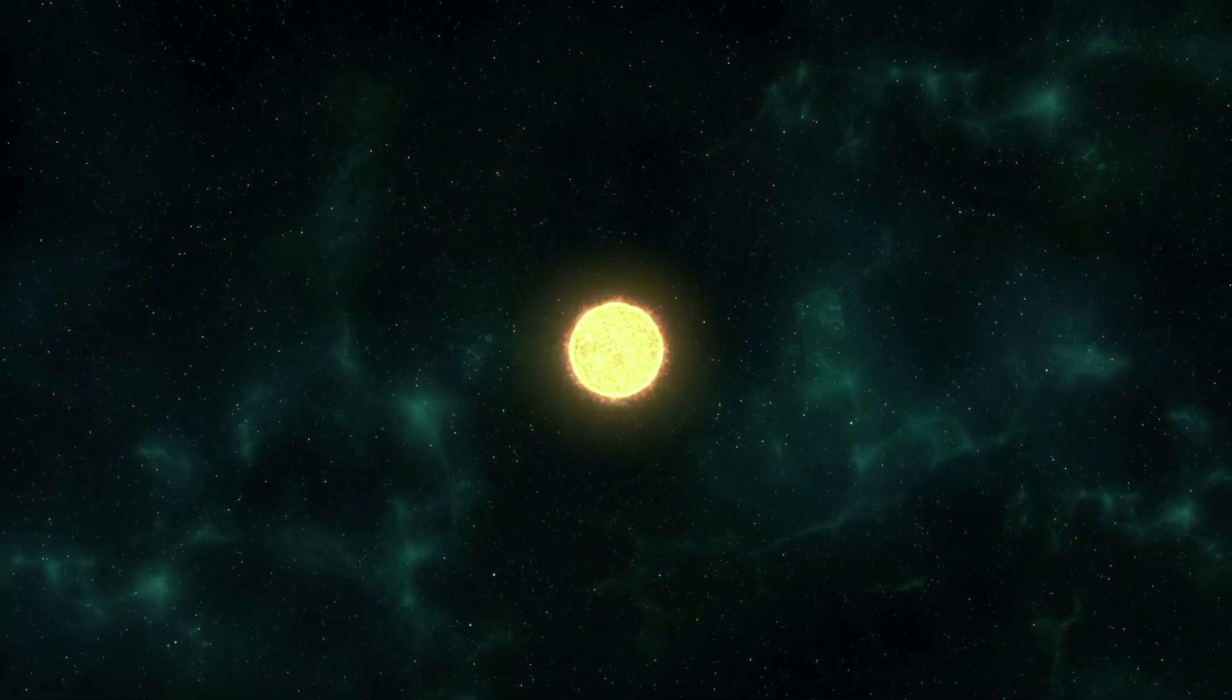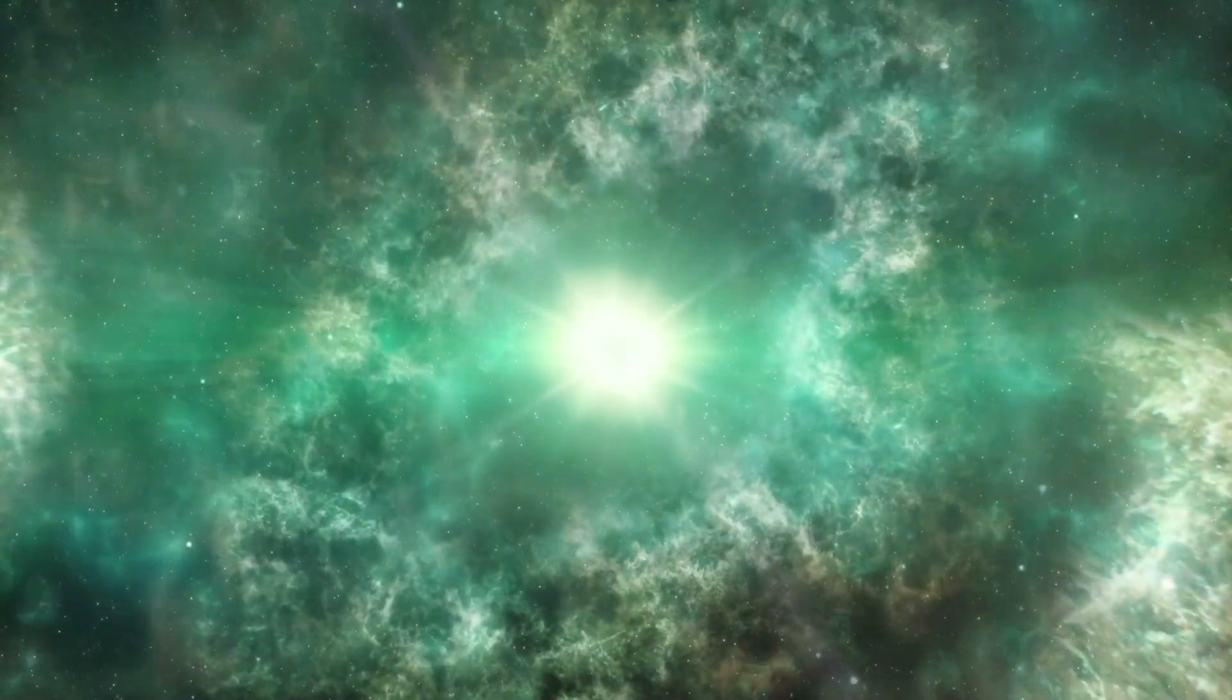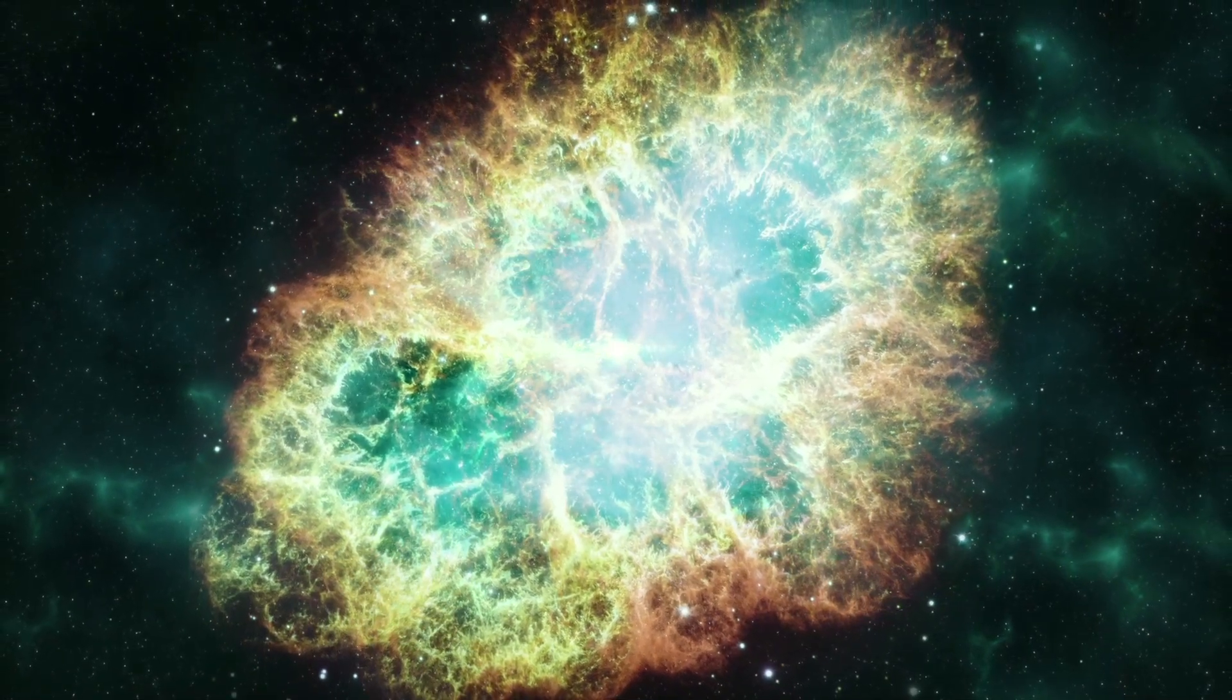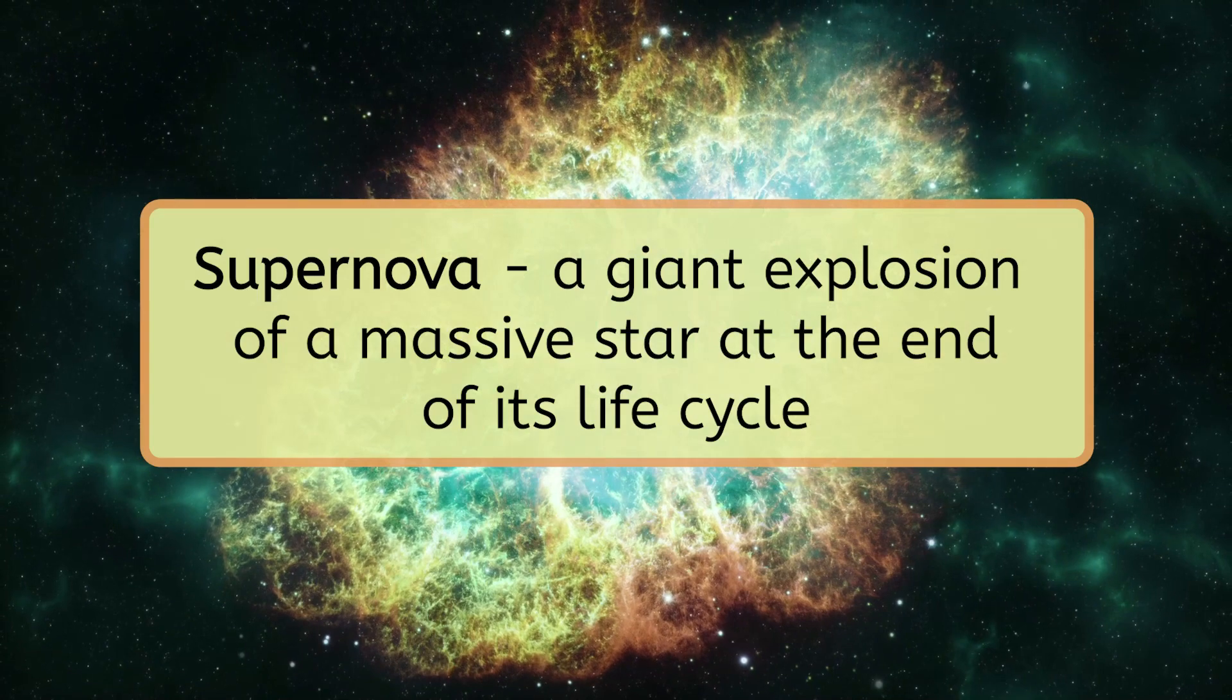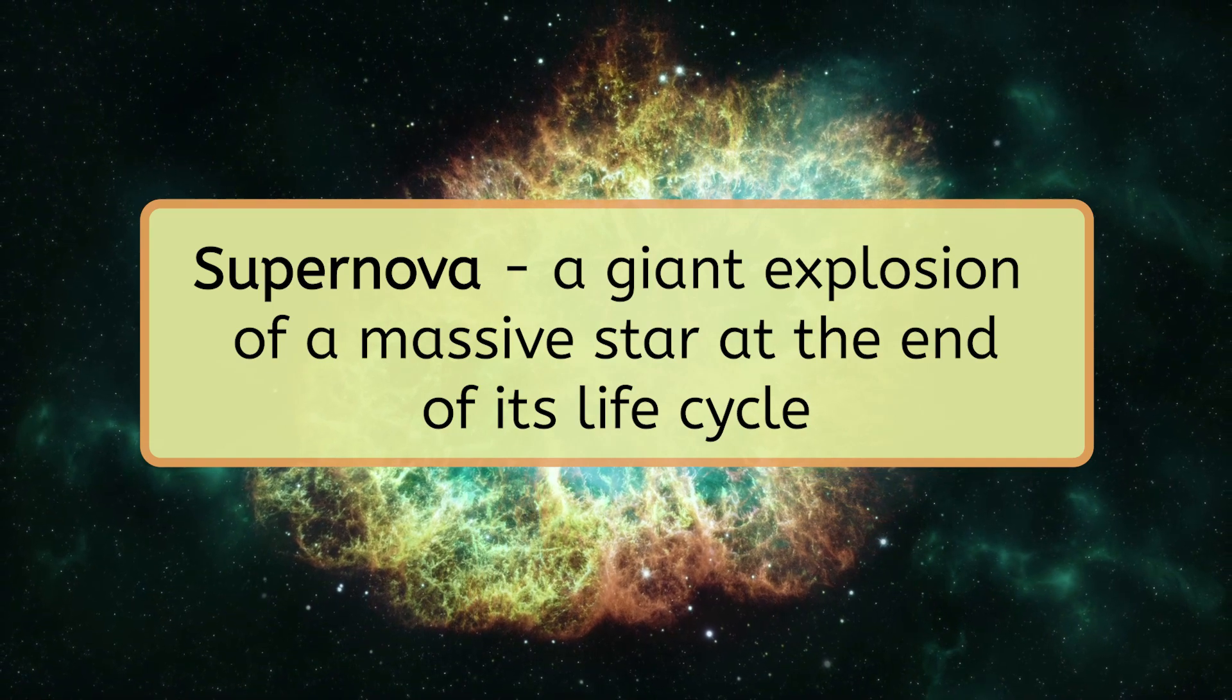Once the red supergiant star has burned through all of its helium too, it has no fuel left, so nuclear fusion stops. Since these stars are so massive, the star completely collapses under its own immense gravity. This creates a giant cosmic explosion called a supernova and marks the end of a massive star's life cycle. This explosion sends a massive amount of energy and material extremely far away into space. It also causes the star's brightness to increase so much that if a star we can see from Earth went supernova, it would look like a second sun in the sky.